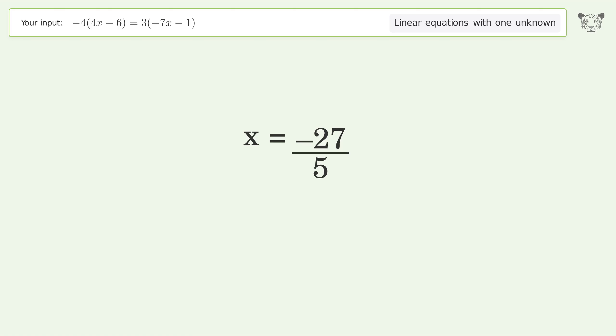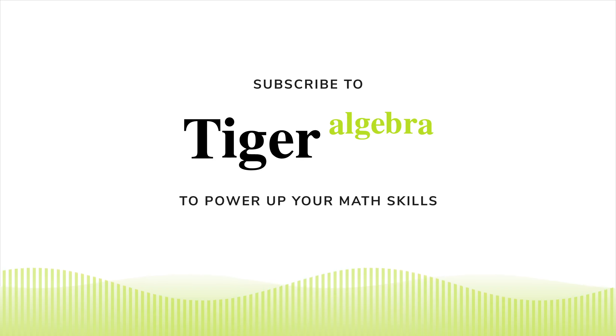And so the final result is x equals negative 27 over 5. Thank you.